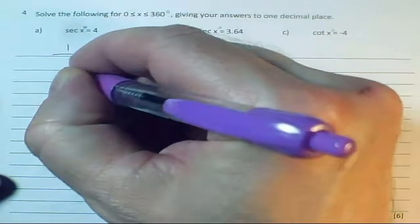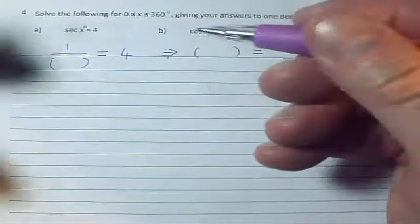You remember the definition of sec x. So in fact, all of these are the reciprocals of the standard trig functions. So one over a standard trig function is going to equal 4. So you transform that into the regular trig function equals reciprocal of both sides. It's going to be 1 over 4.